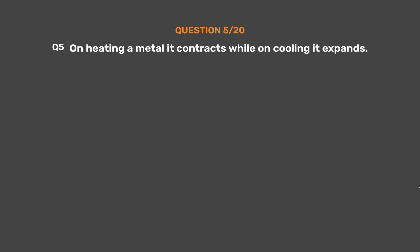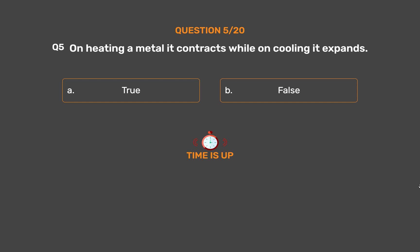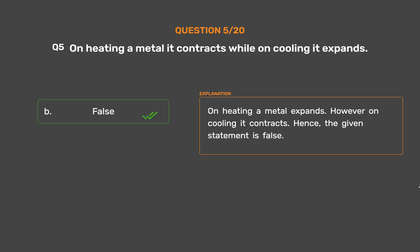Question number 5: On heating a metal it contracts while on cooling it expands. Option A: True. Option B: False. The correct answer is Option B, False. On heating, a metal expands. However, on cooling it contracts. Hence, the given statement is false.